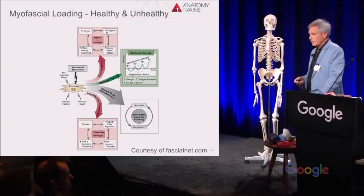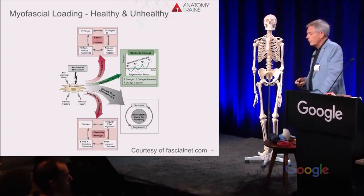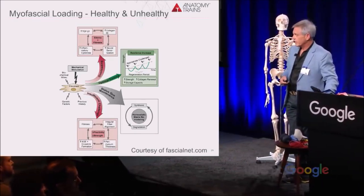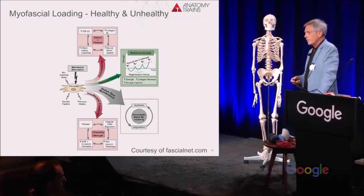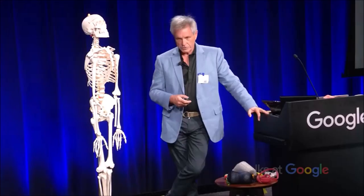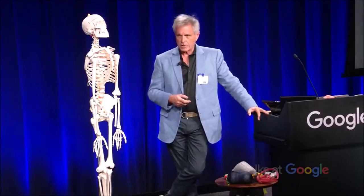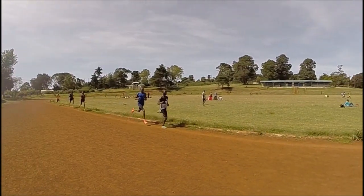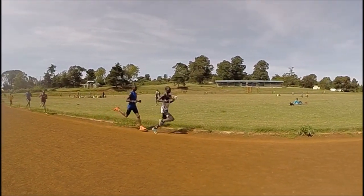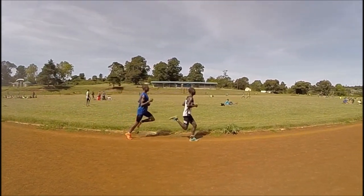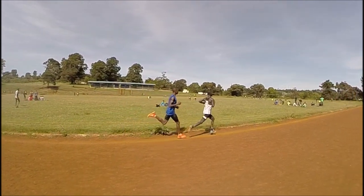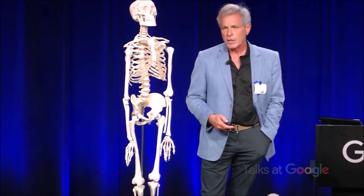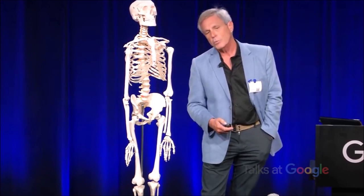If you don't do enough to stimulate the cell, you'll get fibrosis and lack of flexibility and strength. If you overdo it, you get another kind of fibrosis and edema around the cell. Just the right amount maintains the status quo, but trainers are looking for that optimal zone of building the fascia. Fascia builds slower than muscle — you can't get the fascial system to build up as fast — which is why many people get injuries. This leads us to look at how muscles are strung together in the body as anatomy trains or myofascial meridians, to understand how the body pattern works as a tensegrity.